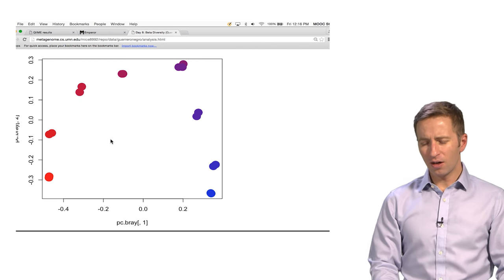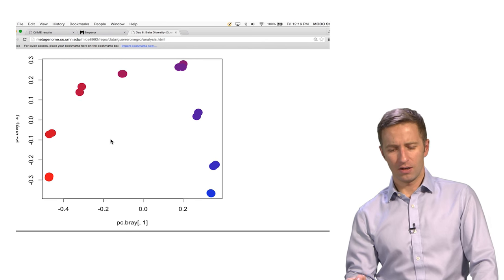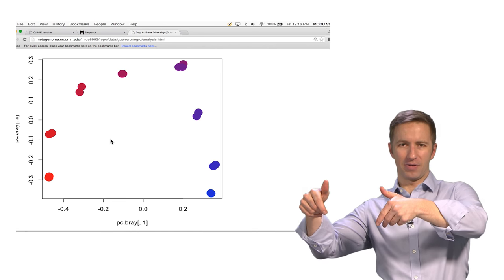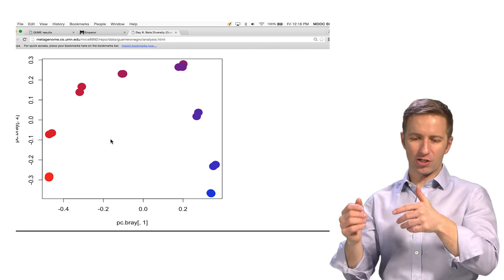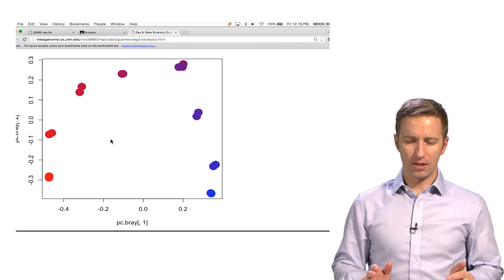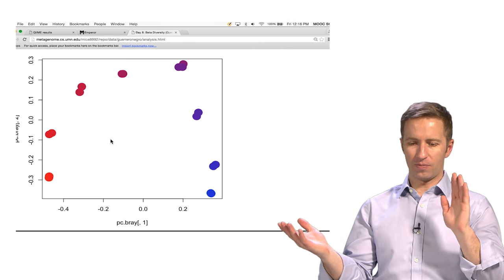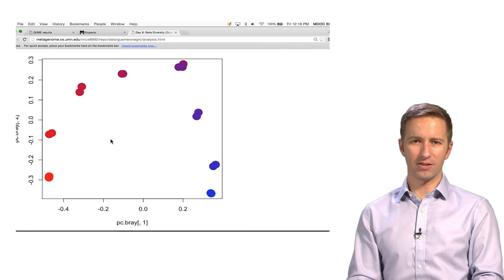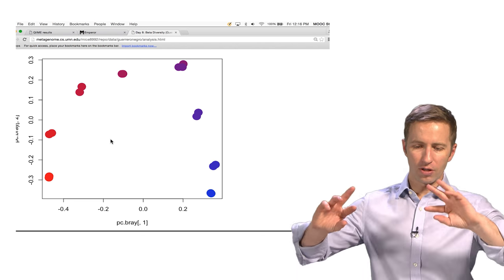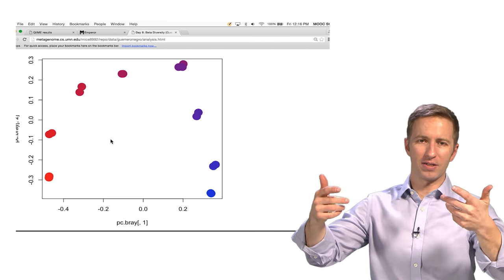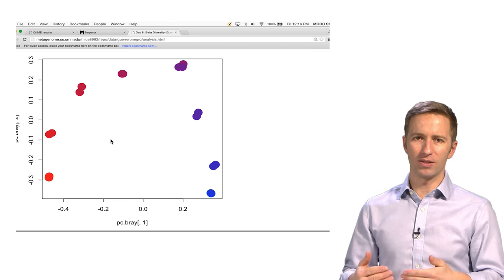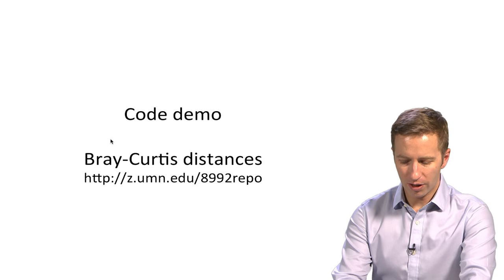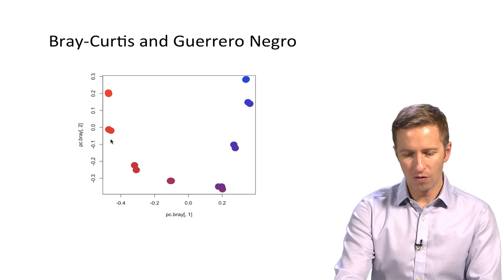Now, I want to point something out. The plot here is upside down relative to the other plots. But that actually doesn't matter. The sign of the axes, the first axis and any of the axes in principal coordinates analysis is totally arbitrary. So you could flip this upside down and it would be the same. All the plot is showing you is the relative distances between the samples. So that's what we get from Bray-Curtis.